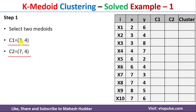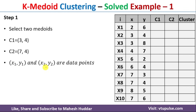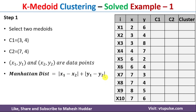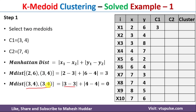Once the two medoids are selected, the next step is to calculate the distance from these medoids to each data point using the Manhattan distance formula. If (x1, y1) and (x2, y2) are two data points, the Manhattan distance is: |x1 − x2| + |y1 − y2|. For example, the distance from (2,6) to the medoid (3,4) is calculated accordingly, and we repeat this for all data points with respect to C1.